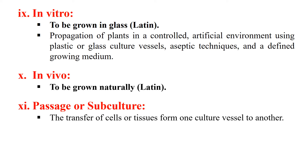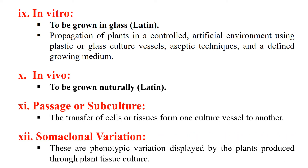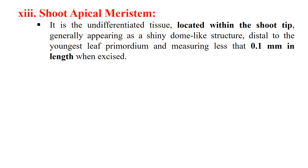In case of animal cells this process is generally known as passaging. The next term is somaclonal variation — these are variations or changes which are due to plant tissue culture, or more specifically, variations shown by plants produced through plant tissue culture. These are known as somaclonal variations.